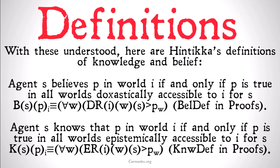Hopefully, that makes a little bit of sense. Basically, what we're saying is: you believe something if it is true in all worlds that are doxastically accessible to you — that thing is true. In other words, all worlds that are compatible with your beliefs have that thing true. Or, you know something if, in all worlds compatible with your knowledge, that thing is true.